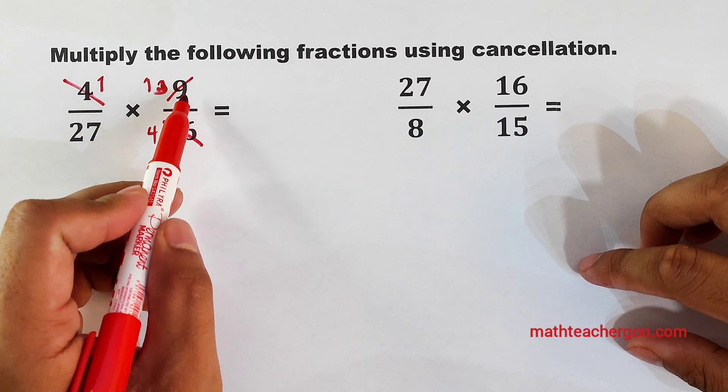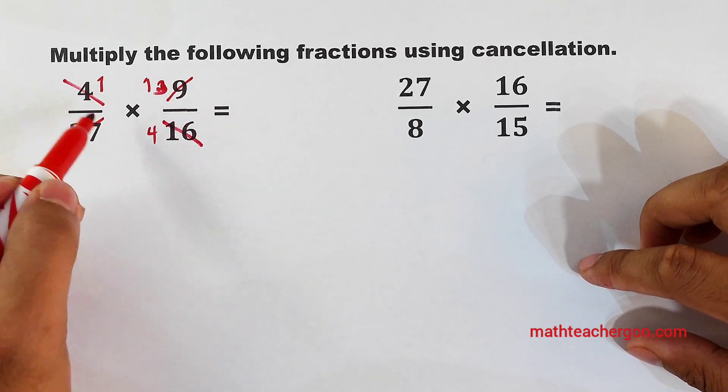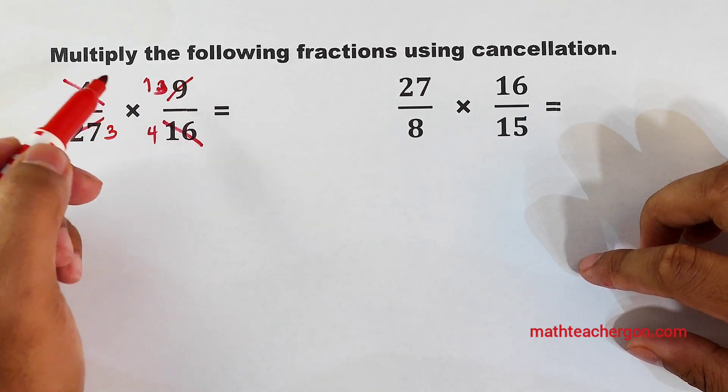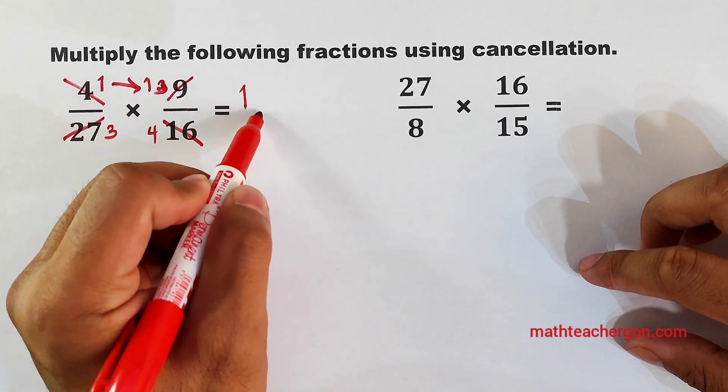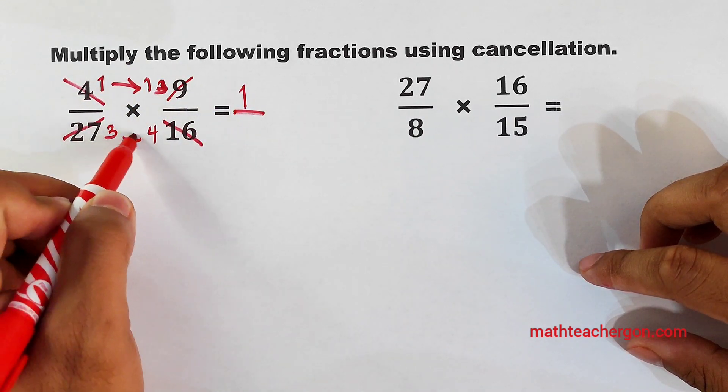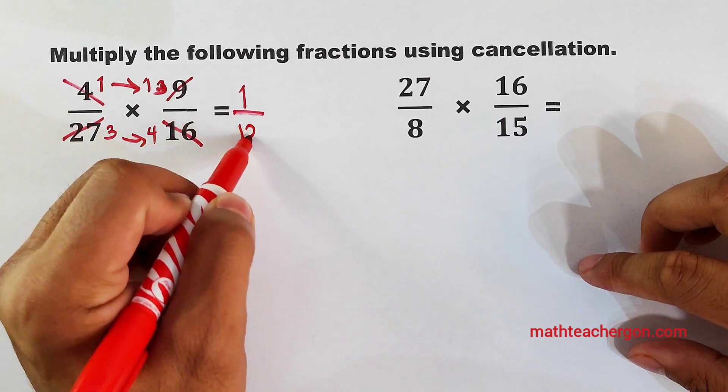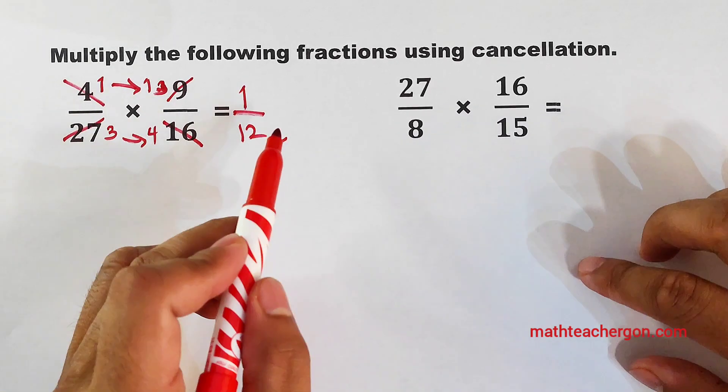There's only 1 9 here. And for this one, it will become 3. So let's multiply the numbers. 1 times 1 is equal to 1, over 3 times 4, that would be 12. And as you can see, this is the simplified answer.